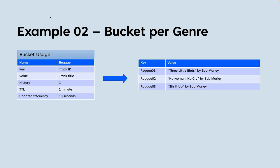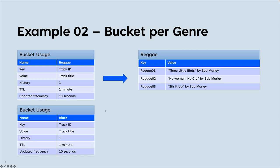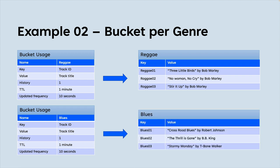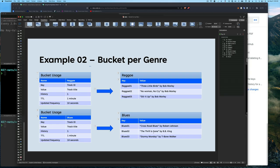If you want the user to be able to see the last 20 tracks suggested, you'd just use 200 seconds as your TTL — since we update every 10 seconds, after 200 seconds you'll have 20 track titles, and when you put the 21st one in, the first one drops off, leaving you with 20. So we can have a bucket called 'reggae' with keys like 'reggae_01' and so on, and another bucket called 'blues' with its own keys and values. Let's jump to the command line and see what this looks like as a solution.